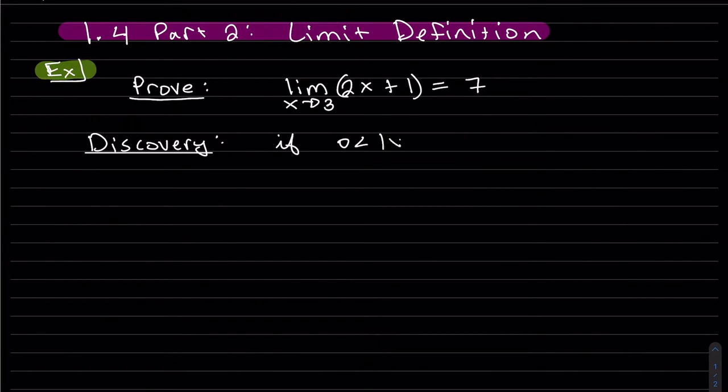If 0 < |x - a|, which is |x - 3|, less than delta, then we want |f(x) - L| is less than epsilon. So that's what we want to prove. We're going backwards. The discovery is scratch work.